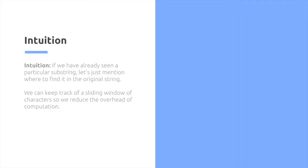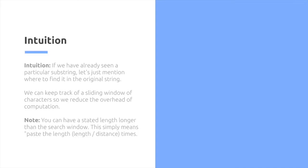So how does it look like? The intuition is that if we have already seen a particular substring, let's just mention where to look at in the original string to retrieve the same string. We can keep track of a sliding window of characters, so we reduce the overhead of computation and use less memory.